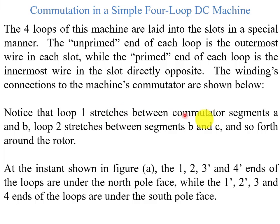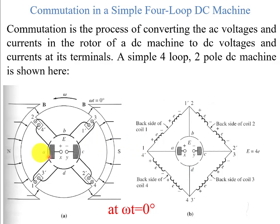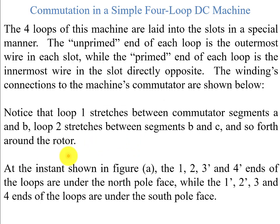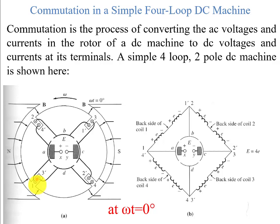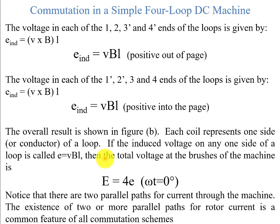The four loops of this machine are laid into the slots in a special manner: the unprimed end of each loop is the outermost wire in each slot, while the primed end is the innermost wire of the slot directly opposite. Notice that loop 1 stretches between commutator segments A and B, loop 2 stretches between segments B and C, and so forth. At this instant, ends 1, 2, 3-prime, and 4-prime are under the north pole face, while 1-prime, 2-prime, 3, and 4 are under the south pole.